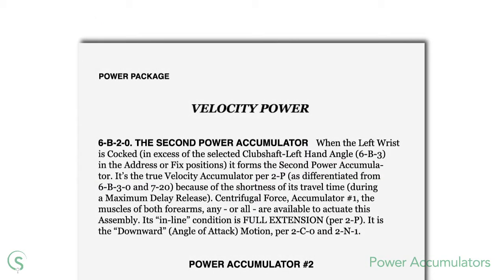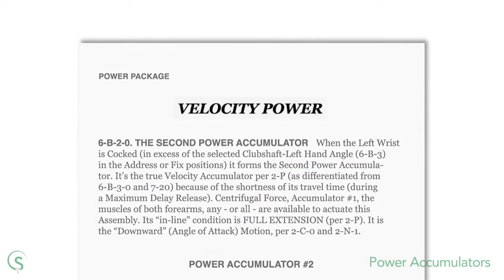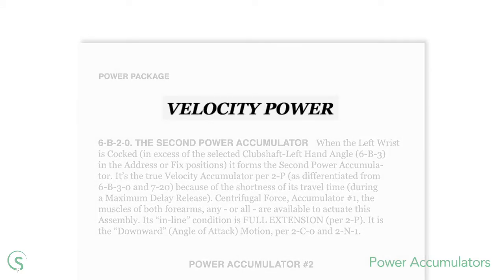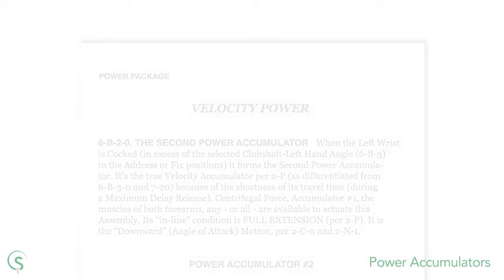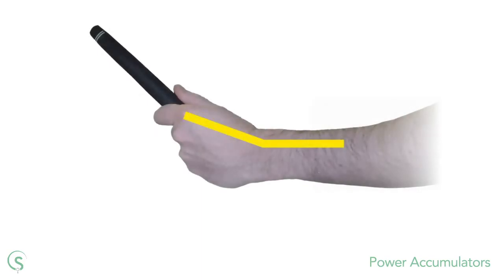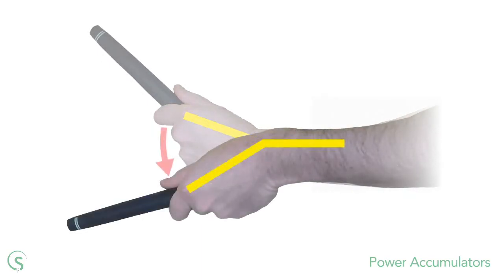Mr. Kelly called the second power accumulator velocity power for a couple of reasons. Firstly, there isn't a wide range of motion when cocking and uncocking the left wrist, so you can release that accumulated power very quickly. This helps accelerate the club head through impact.